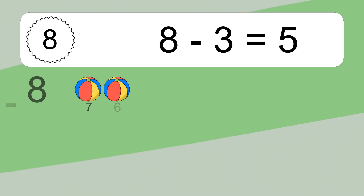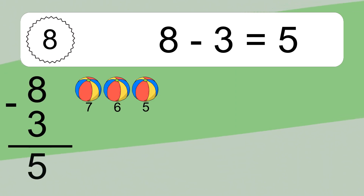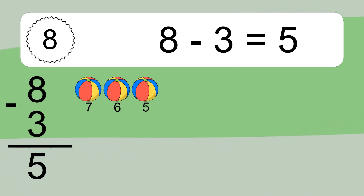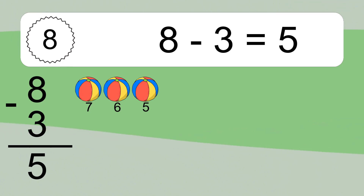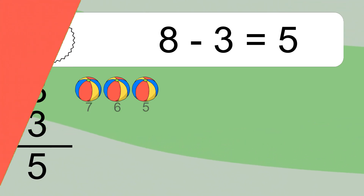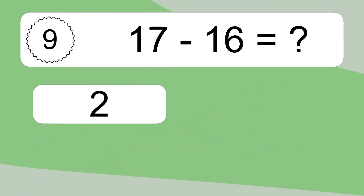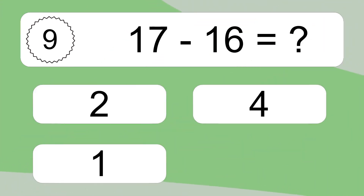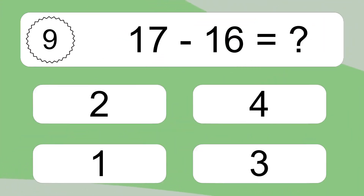8 minus 3 equals 5. Let's count it. 7, 6, 5. 17 minus 16 equals what?